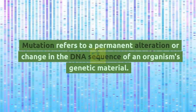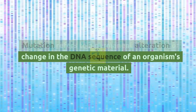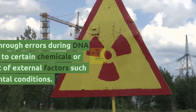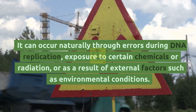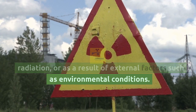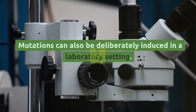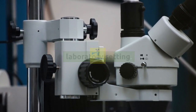What is mutation? Mutation refers to a permanent alteration or change in the DNA sequence of an organism's genetic material. It can occur naturally through errors during DNA replication, exposure to certain chemicals or radiation, or as a result of external factors such as environmental conditions. Mutations can also be deliberately induced in a laboratory setting.